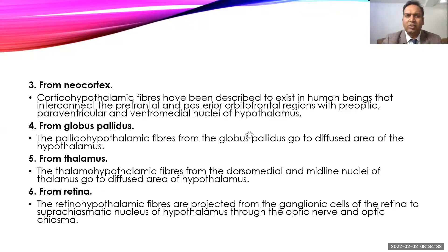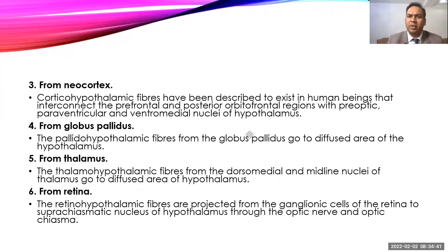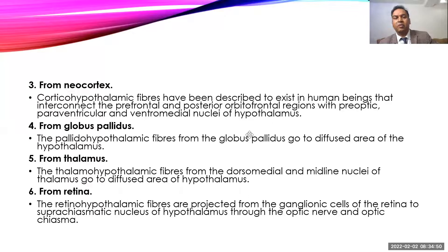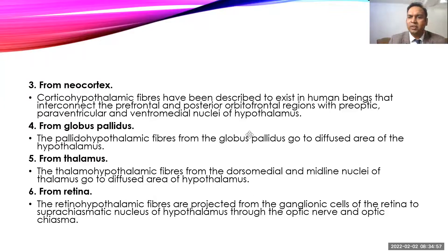Fibers also reach from the neocortex — called corticohypothalamic fibers — coming from different cortical areas, more specifically the prefrontal and orbitofrontal regions, and projecting to the preoptic, paraventricular, and ventromedial nucleus. Pallidohypothalamic fibers come from the globus pallidus and project to different areas of the hypothalamus.